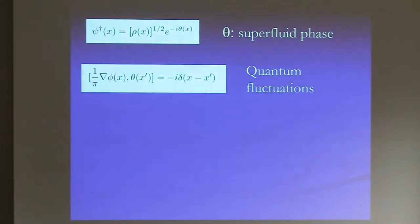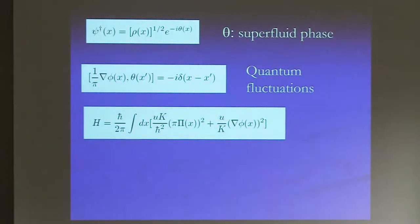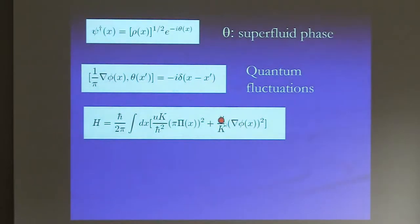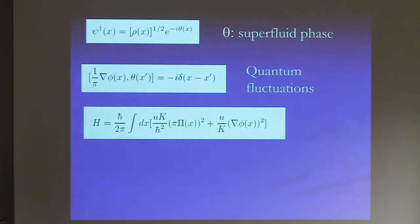For a Bose-Hubbard model with repulsion — say the Lieb-Liniger model in the continuum where interaction goes from 0 to infinity — the Luttinger parameter K goes from infinity (no repulsion: this term from interaction drops out) down to K=1 for infinitely repulsive bosons, which in 1D is the same as free spinless fermions. K=1 is the hallmark of non-interacting particles. Since you have a quadratic Hamiltonian, you can compute all correlations.